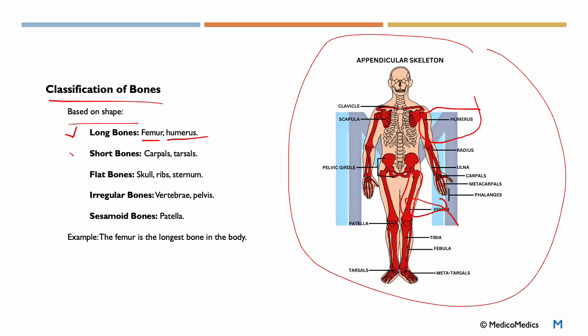We have short bones like the carpals, as you can see here, and the tarsals, seen here. You can immediately notice that the tarsals are quite short, and so are the carpals. The humerus is quite long, and the femur is even longer.